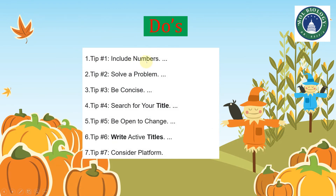What we should do: include numbers — what we have concluded, what we have done in the experiments, and what we used as materials and methods. These three things we can consider. Always try to solve a problem, because titles that solve a problem are always good. Be concise — that is most important. Also, search for your title keywords online; you can search those keywords before starting to write your own title.